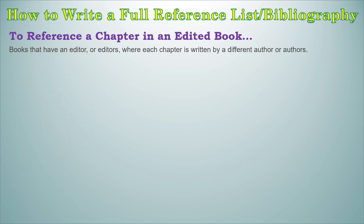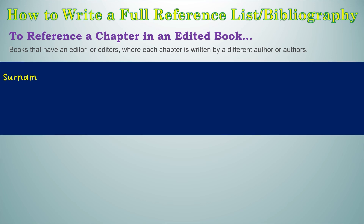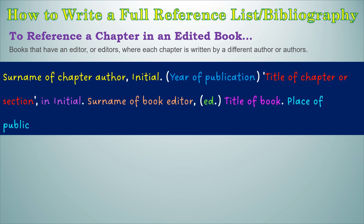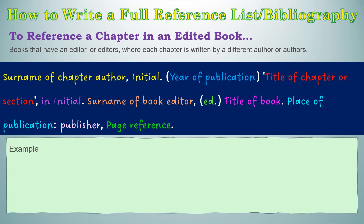To reference a chapter in an edited book — which is a book that has an editor or editors where each chapter is written by a different author — you will need: the name of the author and initial, full stop, open brackets year of publication, close brackets, open quotations, title of chapter or section, close quotations, comma, 'in' and then the initial and name of the book editor, comma, open brackets 'ed.' close brackets, then the title of the book, full stop, the place of publication, colon, the publisher, comma, and the page reference, full stop. Here is an example of what that would look like.